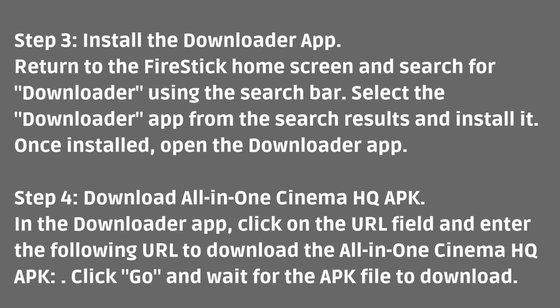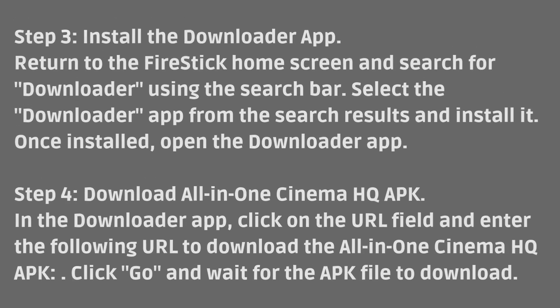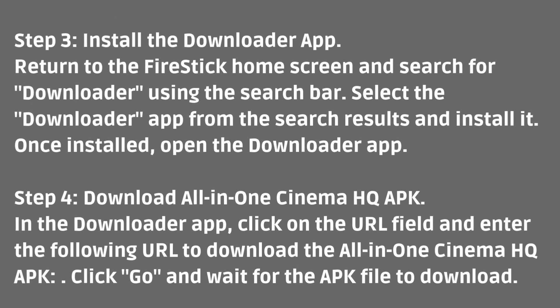Step 3: Install the Downloader app. Return to the Fire Stick home screen and search for Downloader using the search bar. Select the Downloader app from the search results and install it. Once installed, open the Downloader app.